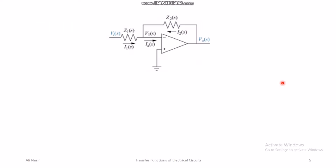Next we look at operational amplifiers, which have been very commonly used for control system circuit implementation in the past — before microcontrollers were widespread. Using op-amps, many PID, PD, and other controllers were designed. After microcontrollers became common, there is less need for op-amp implementations unless analog-type controllers are specifically required.